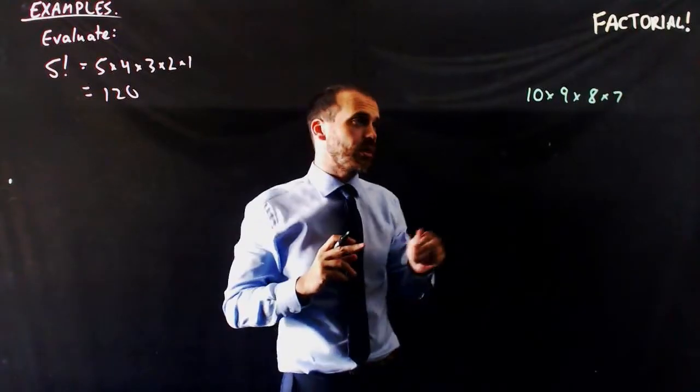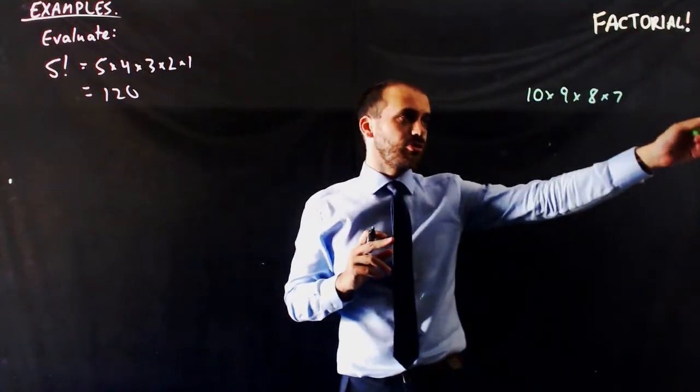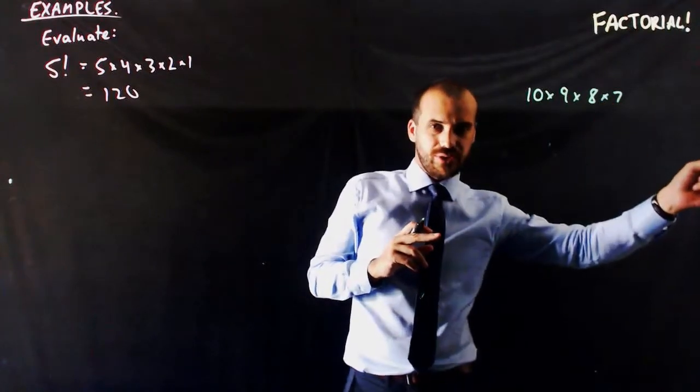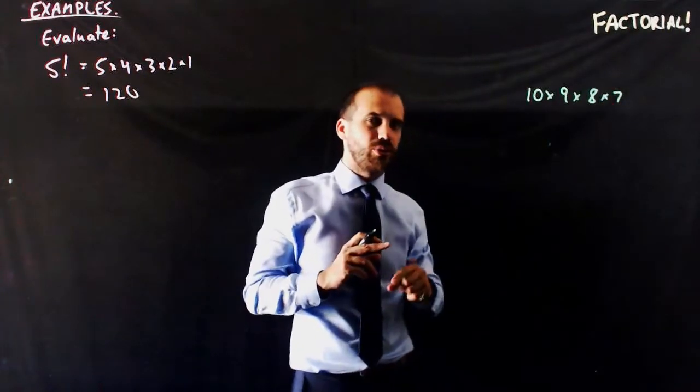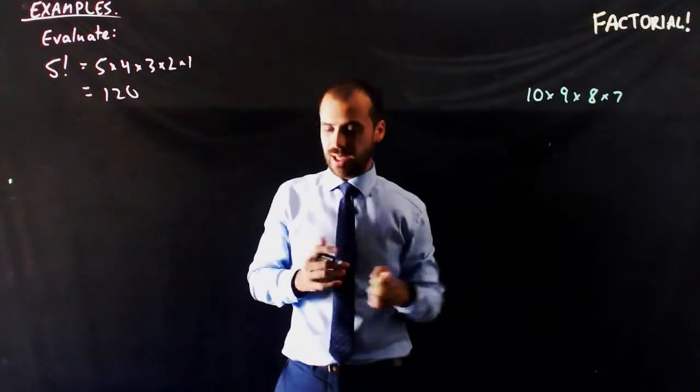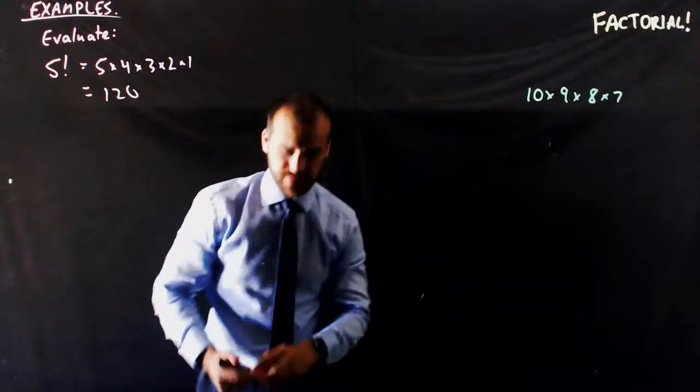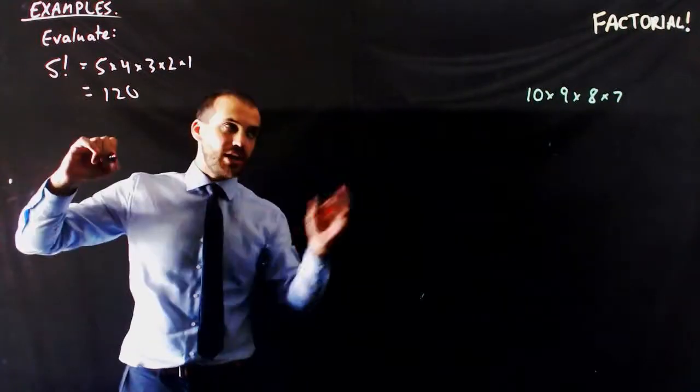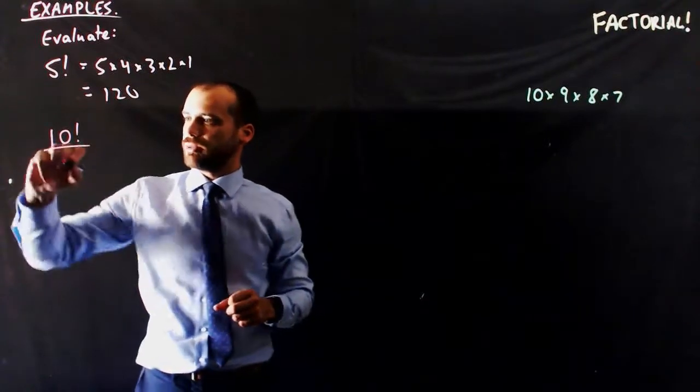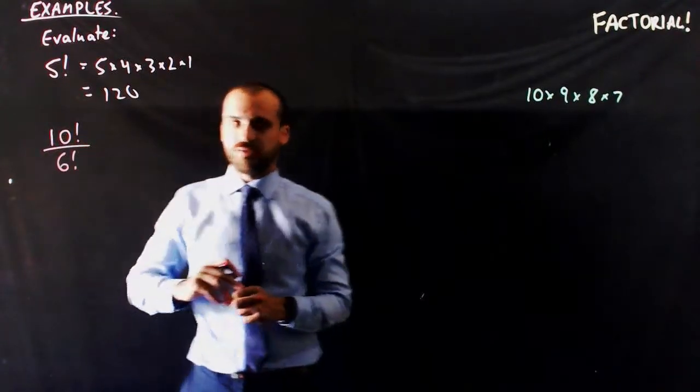And now you're probably thinking, well, I'll just do 10 factorial all the way to there and I'll subtract 6 factorial. But that's not quite going to work, but you're close to the mark. The way that we can make that work is something like this. Evaluate 10 factorial divided by 6 factorial.